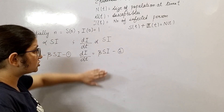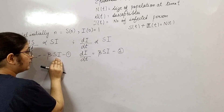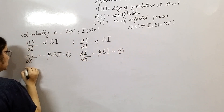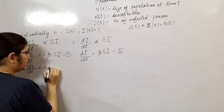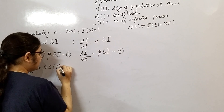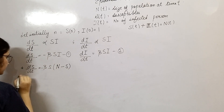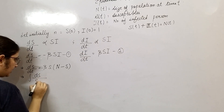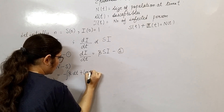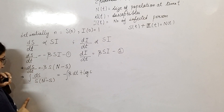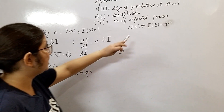Now we solve these two equations. Since dS/dt has both S and I in it, we substitute the value of I from S(t) + I(t) = n+1. This gives dS/dt = -β·S·(n+1-S). Separating variables: dS / [S·(n-S)] = -β·dt + log C. Note we use small n — initially n susceptibles and 1 infected, total n+1.